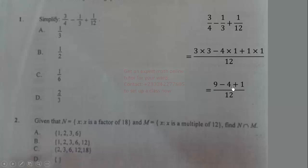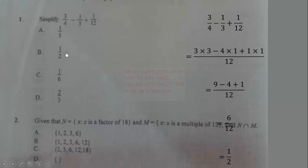We subtract and add: 9 minus 4 is 5, plus 1 is 6. So we get 6/12, which simplifies to 1/2. The correct answer is option B.